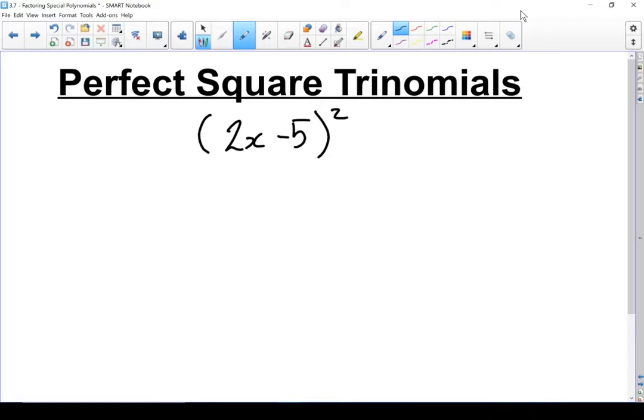Here we have a binomial that is squared. You can also write it as 2x minus 5 times 2x minus 5. Let's multiply that out and you're going to notice a little bit of a pattern.